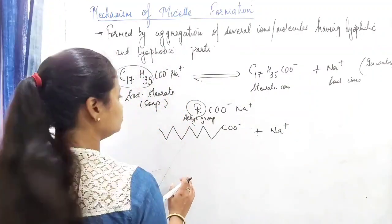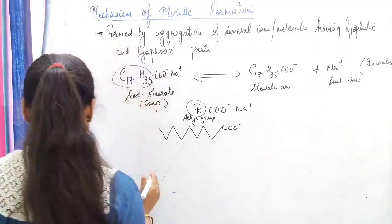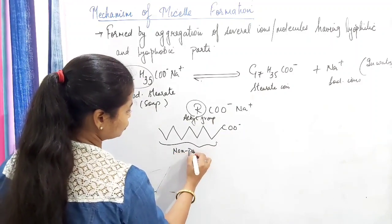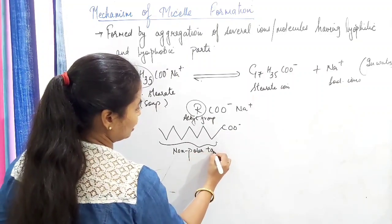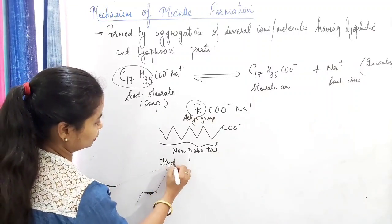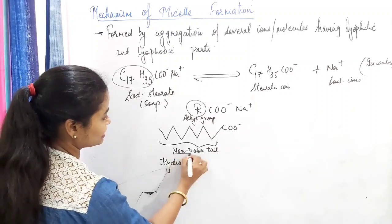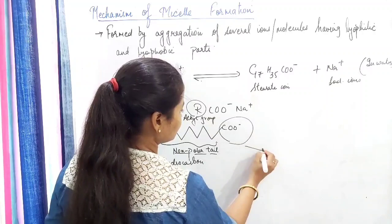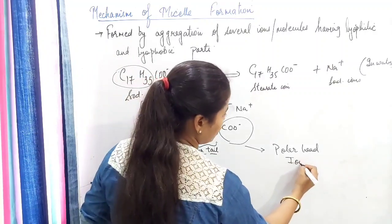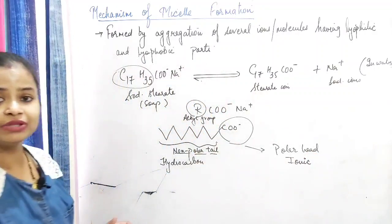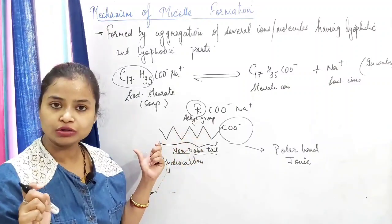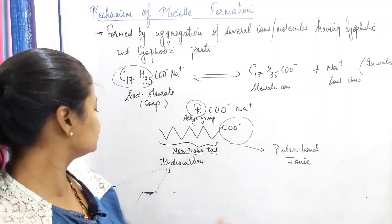Now let us study the structure of the soap molecule in detail. The C17H35 portion is the hydrocarbon portion, called the non-polar tail. This hydrocarbon portion is called the non-polar tail because it is a long chain. The COO⁻ portion is the polar head, which is the ionic part of the soap molecule.